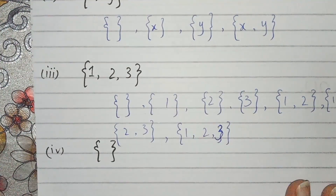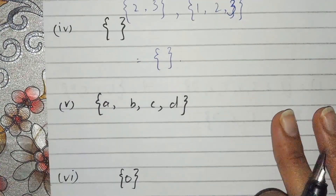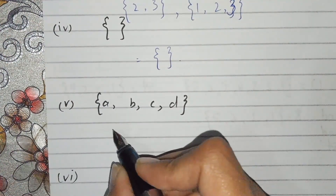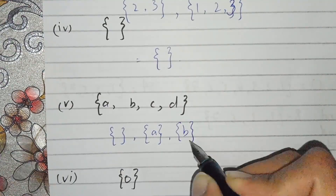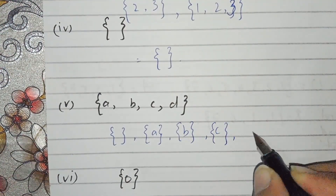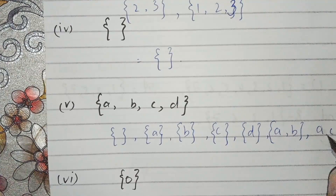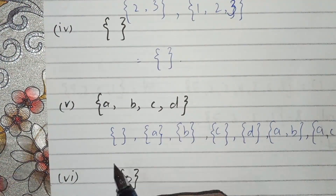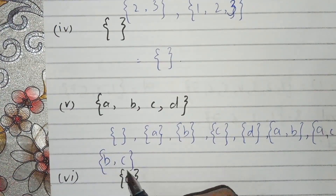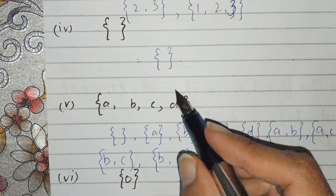The empty set has only one member, that is the empty set. Now part number five: first we write the empty set, then {a}, {b}, {c}, {d}. Now we combine two elements: {a,b}, {a,c}, {a,d}, then {b,c} and {b,d}.